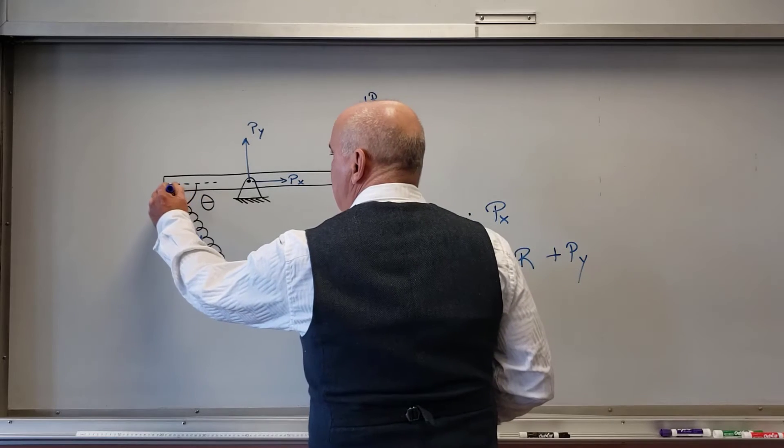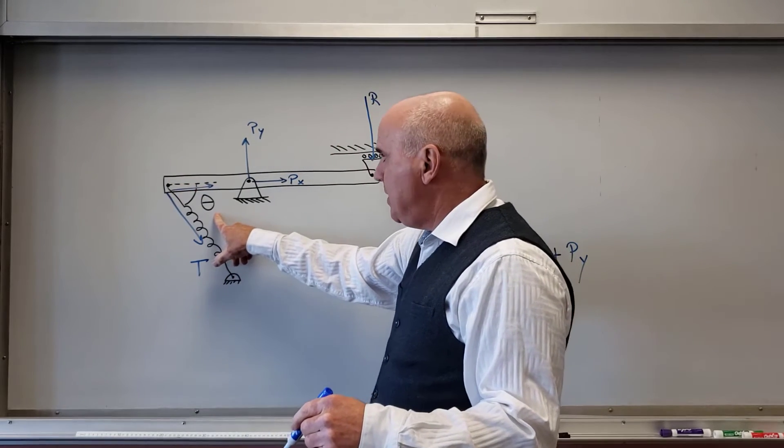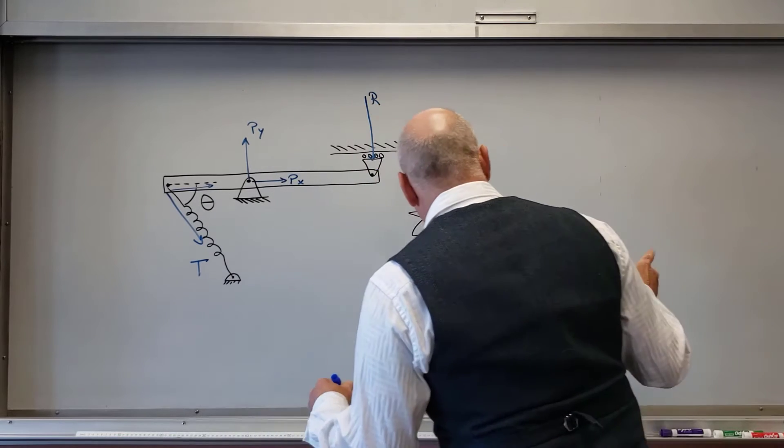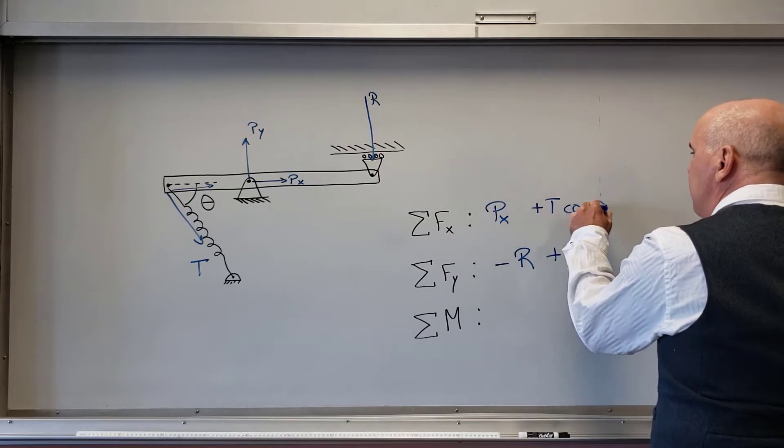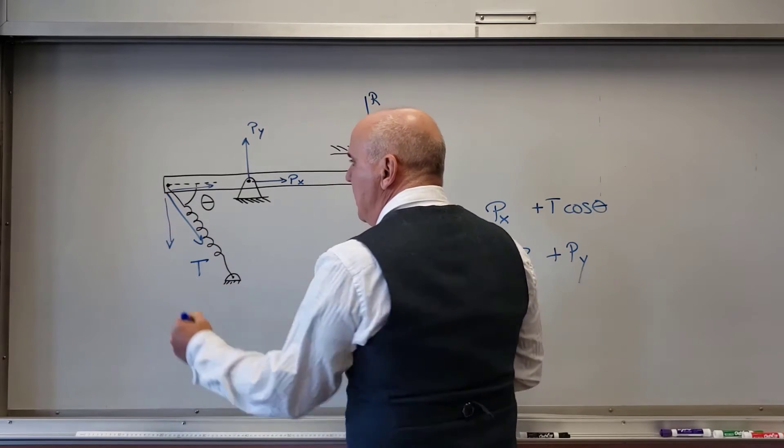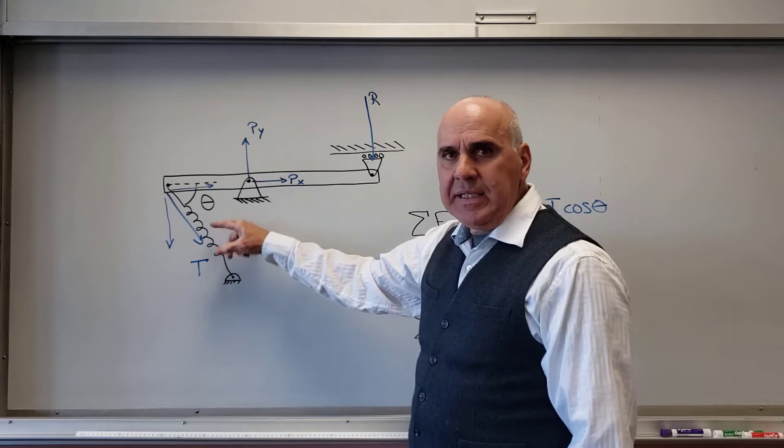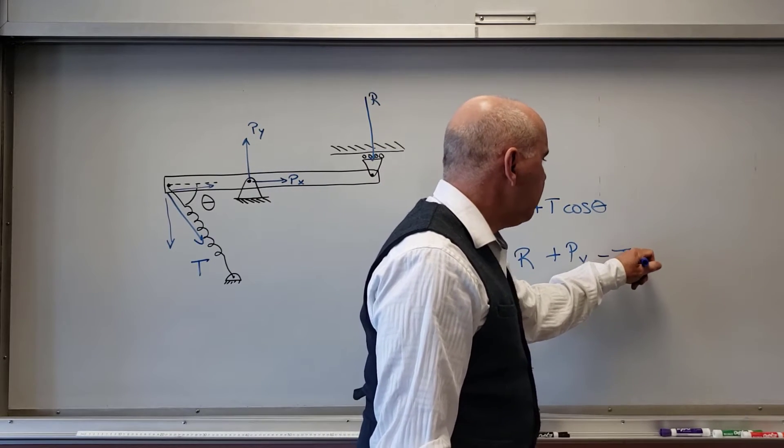And so there's a component in the X direction. That's T cosine theta. T cosine theta. And that's in the positive. So I'm going to put plus T cosine theta. And then there's a component in the Y direction. And that's going to be T sine theta. And that's down. So minus T sine theta.